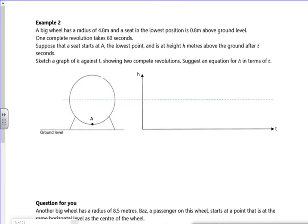So it says a big wheel has a radius of 4.8 metres and the seat is 0.8 metres above. So right down the bottom here, that's 0.8 metres above. So that means then, if the radius is 4.8, then the centre line has got to be 5.6 metres above. 5.6 there, can you see 5.6?